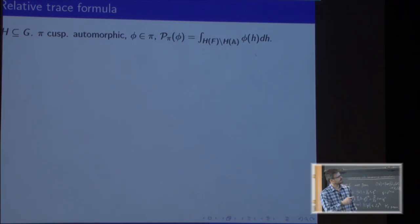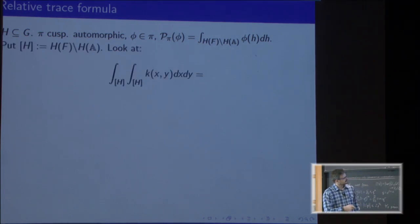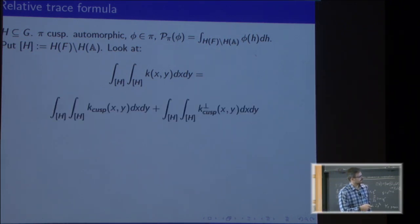The idea is—I recall the problem—we want to study this period over a subgroup. If you denote this quotient bracket H, we want to integrate K twice over this H.